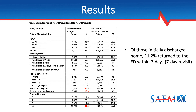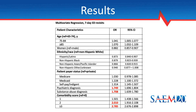This chart shows the characteristics of those that did return to the ED within seven days versus those that did not. Focusing on the bolded red numbers: half of those who returned had a psychiatric diagnosis, 16.3% had a substance use diagnosis, and 43.5% had a comorbidity score of three or greater. In the multivariate regression, the largest associations with a 7-day ED revisit were a psychiatric diagnosis, a substance use or abuse diagnosis, and a comorbidity score of two or greater.